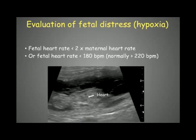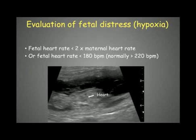We can also try to evaluate fetal distress with ultrasonography, mostly at the time of parturition. If labor has started but no puppies or kittens are coming out, to determine whether it's urgent to do a cesarean section, we can evaluate the fetal heart rate. If the fetal heart rate is lower than 180 beats per minute, that is a sign of fetal distress and the dog should be brought to surgery directly to do a C-section without waiting.